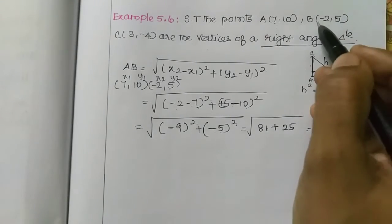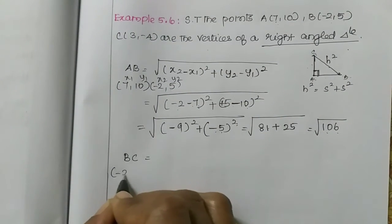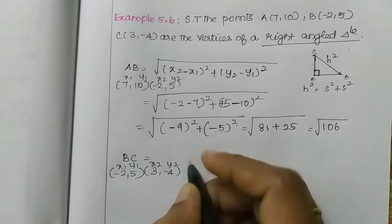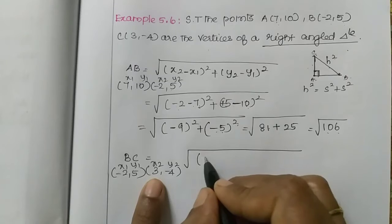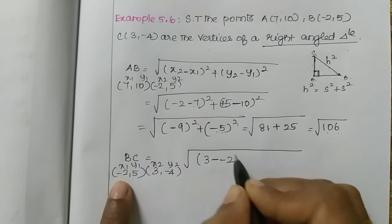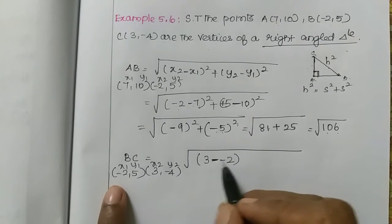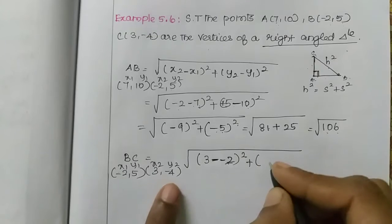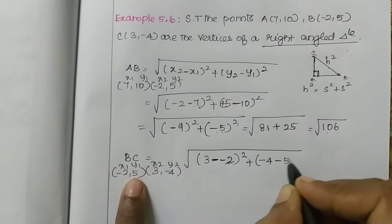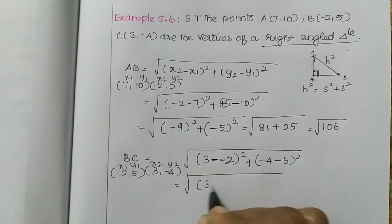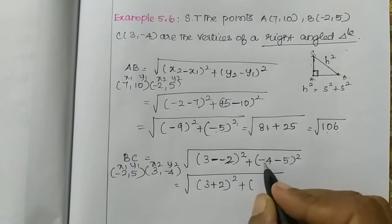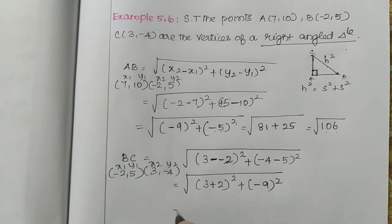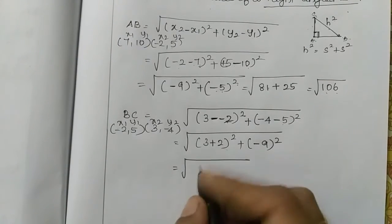Next, distance BC. B is (-2,5) and C is (3,-4). Substituting into the formula: root of (3 minus (-2)) whole square plus (-4 minus 5) whole square. That is root of 5 squared plus (-9) whole square, which is root of 25 plus 81. So BC = root of 106.